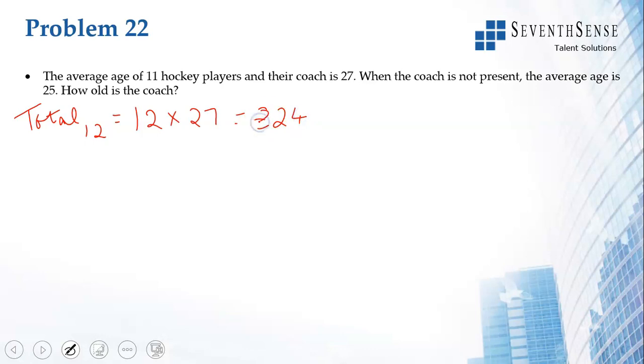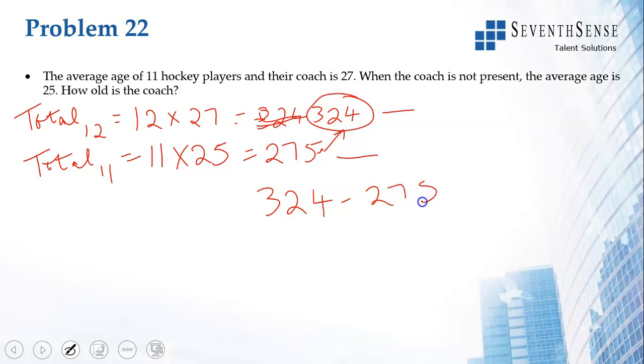When the coach is not present, average age is 25. What is the total age when there are only 11 people? It's 11 times 25, which is 250 plus 25, equals 275. Why is this total coming down? Total of 12 was 324, total of 11 is 275. This increase is happening only because of the coach. So the age of the coach is 324 minus 275, which equals 49. That is the age of the coach.